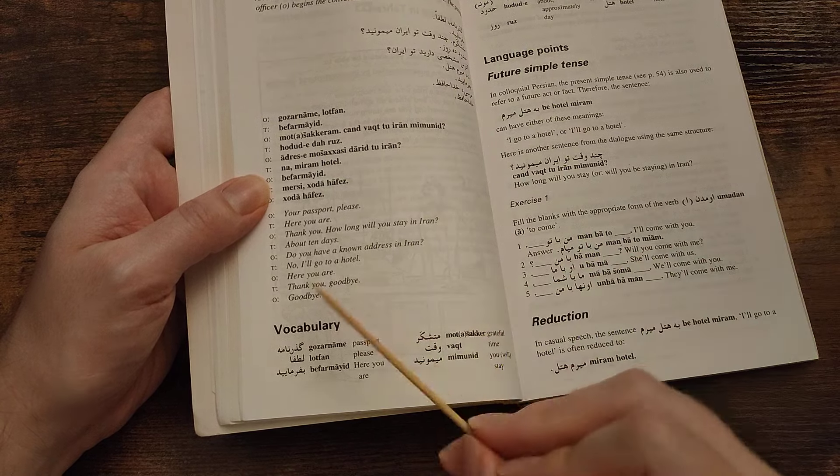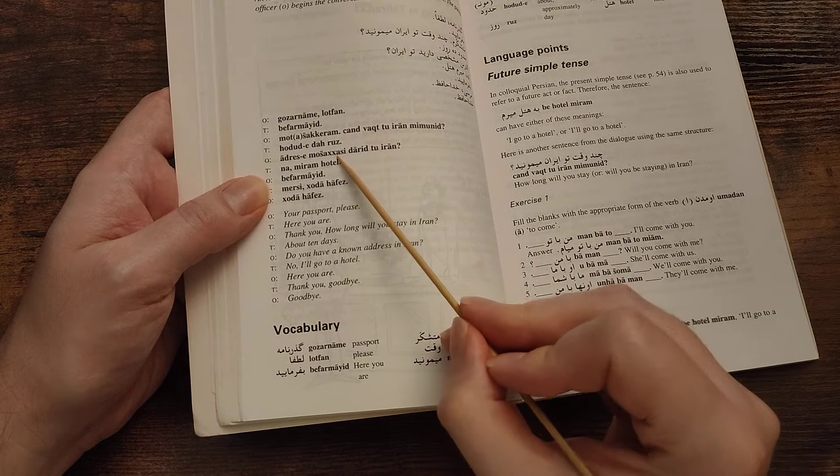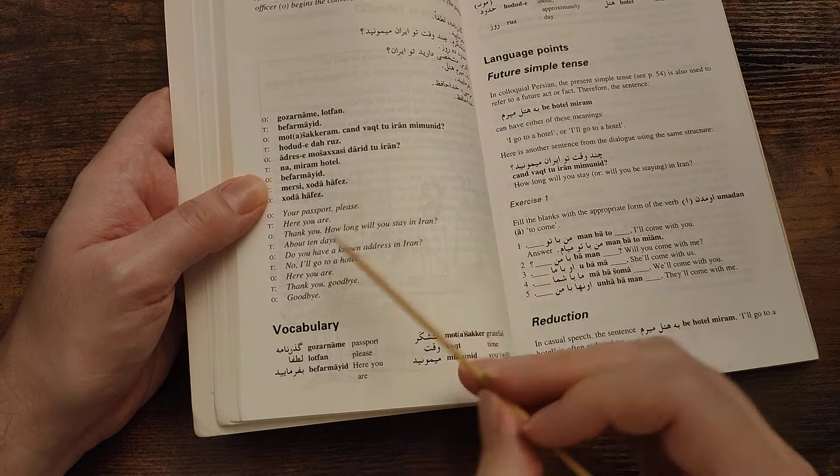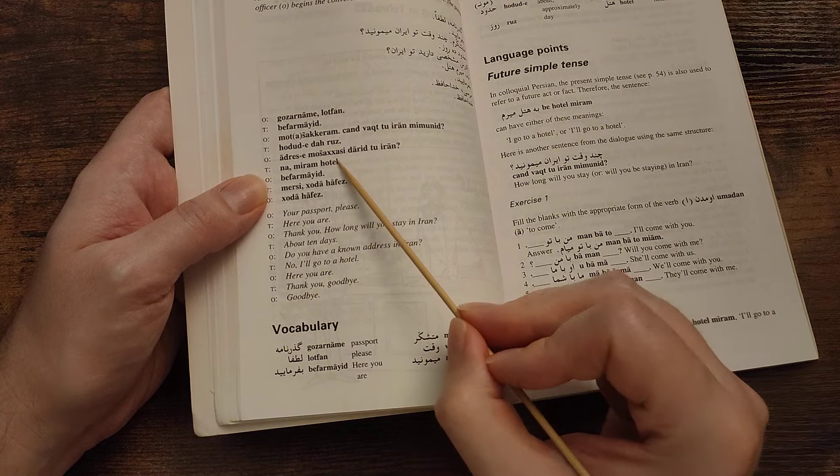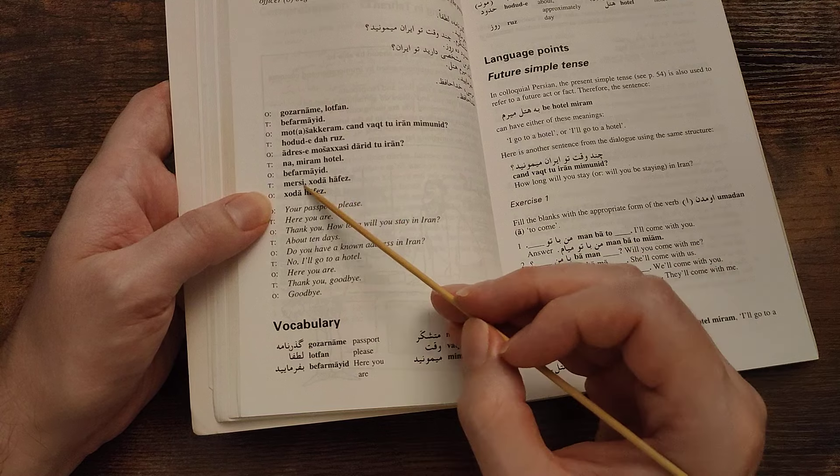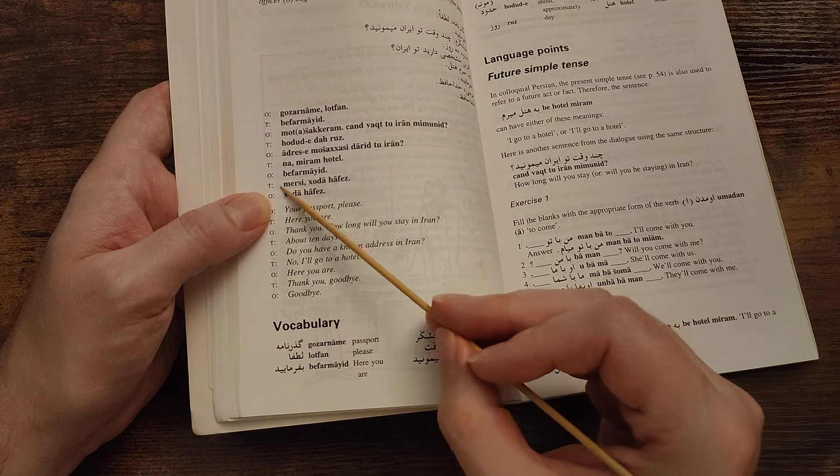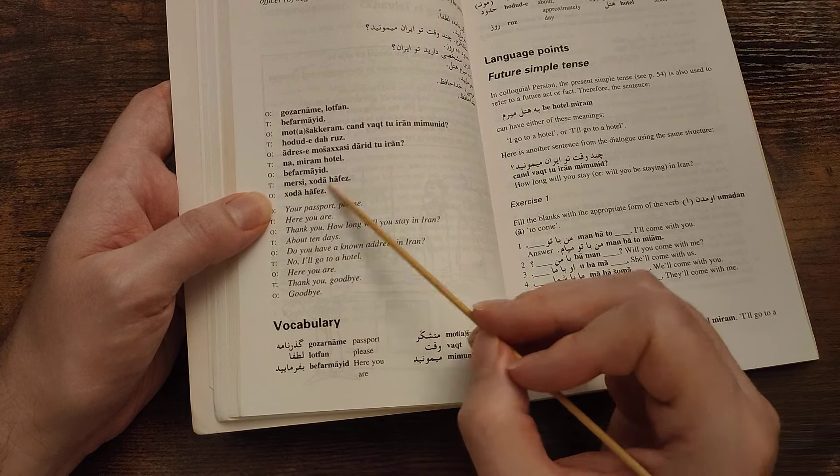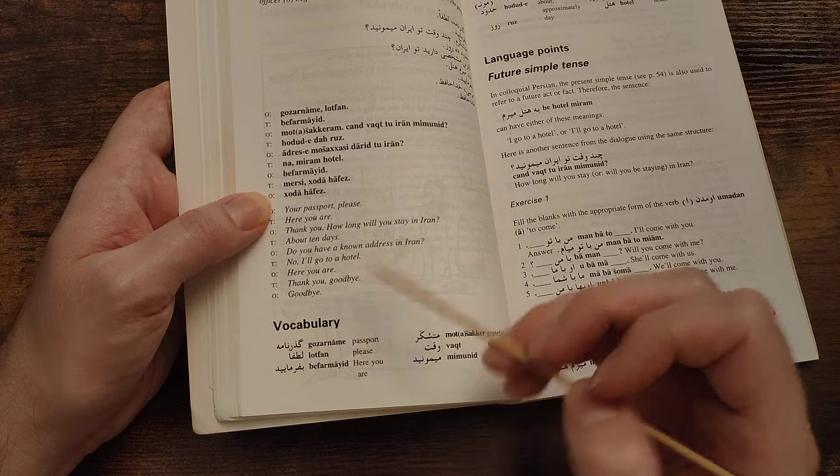Chand vaght tu Iran mimunid? Do you have a known address? Adres-e moshakhasi? A known address. Na, miram hotel. Now I'll go to hotel. Befarmayid. Here you are. Mersi. I love the way you use mersi like in French. Khodahafez. Khodahafez.